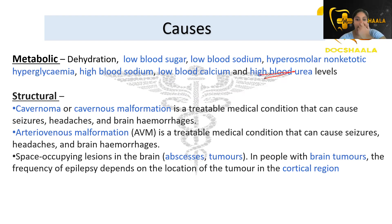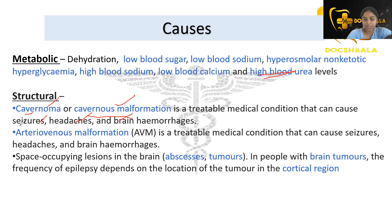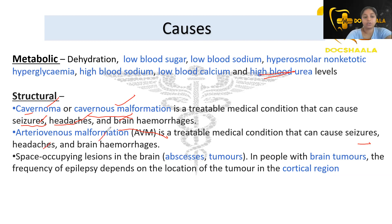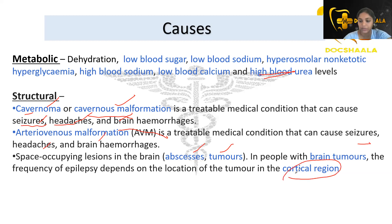Structural causes include structural malformations. Cavernoma or cavernous malformation is a condition that can cause seizures, headaches, and brain hemorrhages — remember those three important symptoms. Arteriovenous malformation also presents with seizures, headaches, and brain hemorrhages. Space-occupying lesions in the brain such as abscesses and tumors — in people with brain tumors, the frequency of epilepsy depends on the tumor location, and if it is in the cortical region, seizure occurrence is higher.